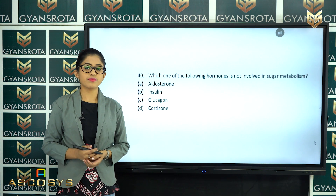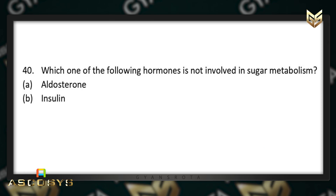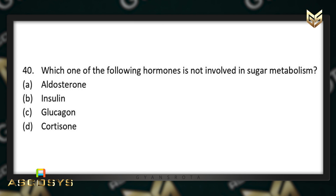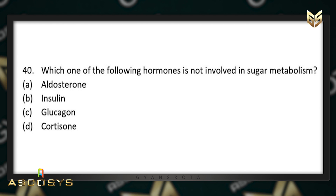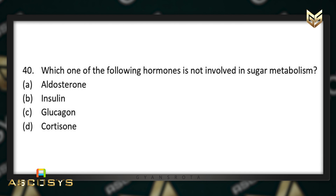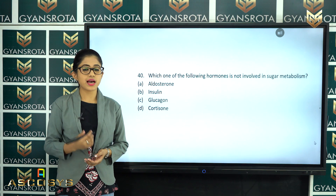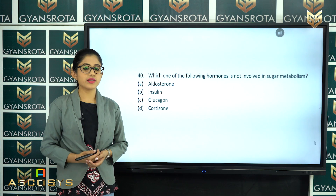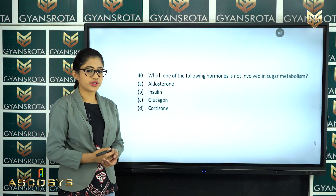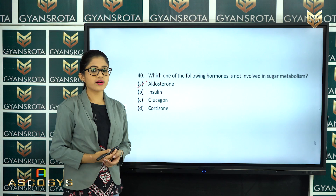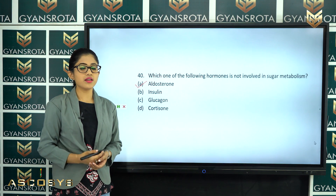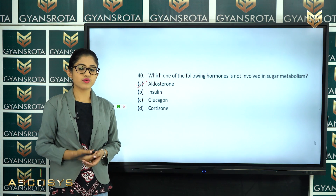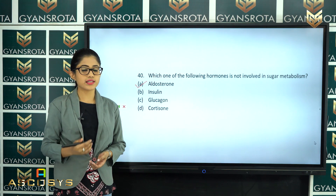The next question is question number 40. Which one of the following hormones is not involved in sugar metabolism? Aldosterone, insulin, glucagon, or cortisone? From the chapter Chemical Coordination and Integration, among the four options, aldosterone is not involved in sugar metabolism. So aldosterone — option number 1 — is the correct answer for this question.